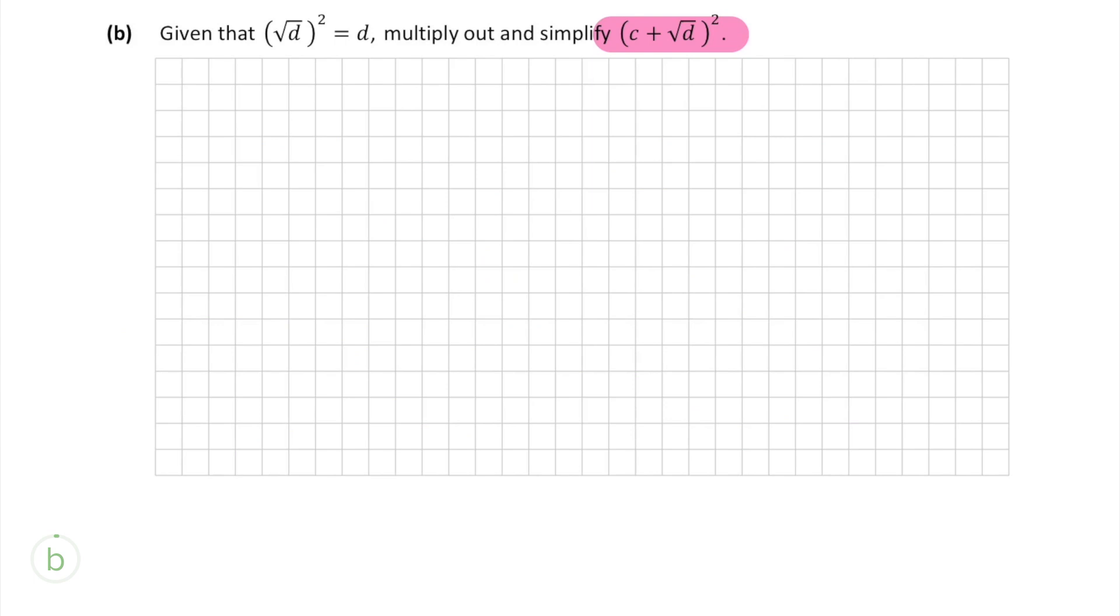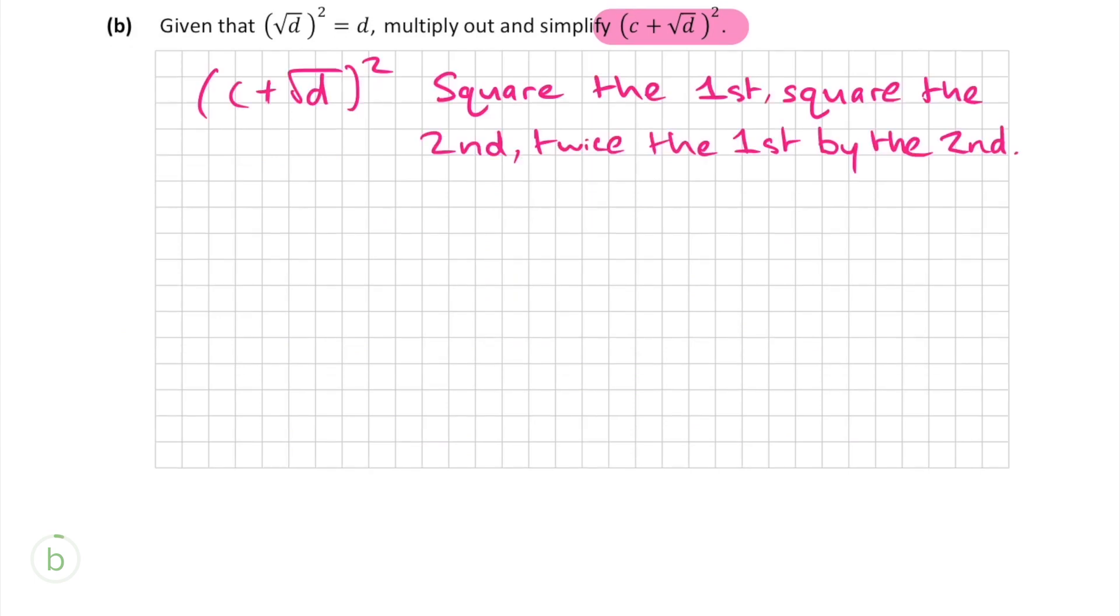Moving on to part B we have to multiply out C plus root D squared. When squaring out a bracket such as this, a trick my teacher told us is to square the first, square the second and then twice the first by the second. This may sound confusing at first but let's just do it as it's a lot easier than it sounds.